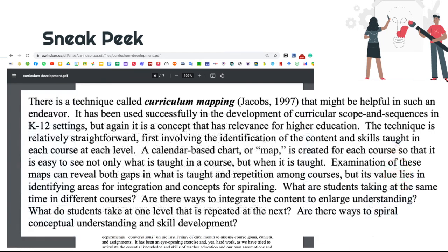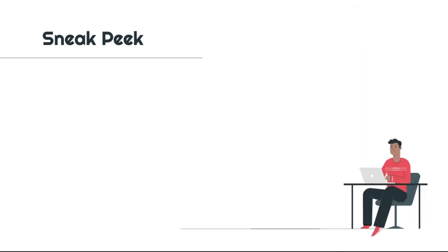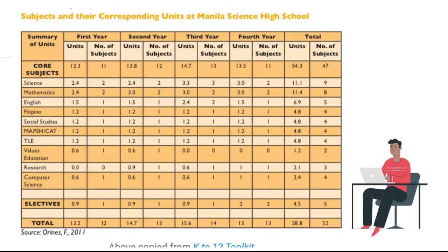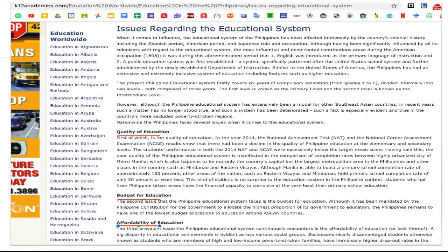One of the related researches includes curriculum coherence. There is a technique called curriculum mapping. According to Jacobs in 1997, this might be helpful in such an endeavor. It has been used successfully in the development of curricular scope and sequences in K-12 settings, and it is a concept that has relevance for higher education. This is shown through subjects and their corresponding units at Manila Science High School.